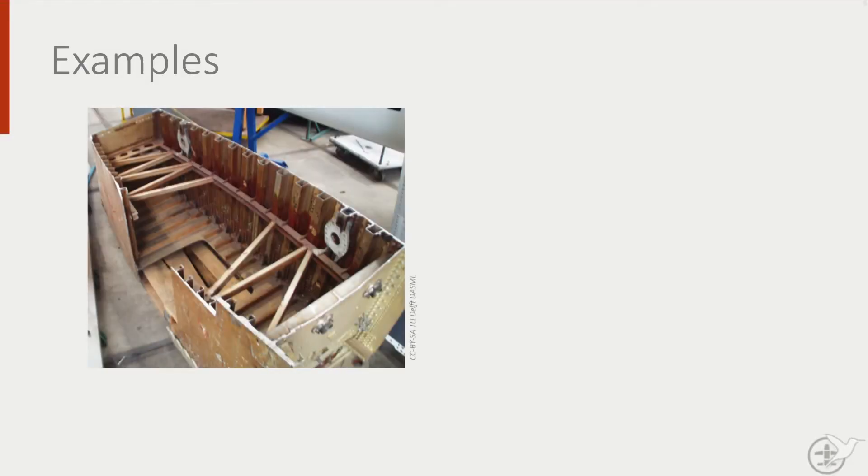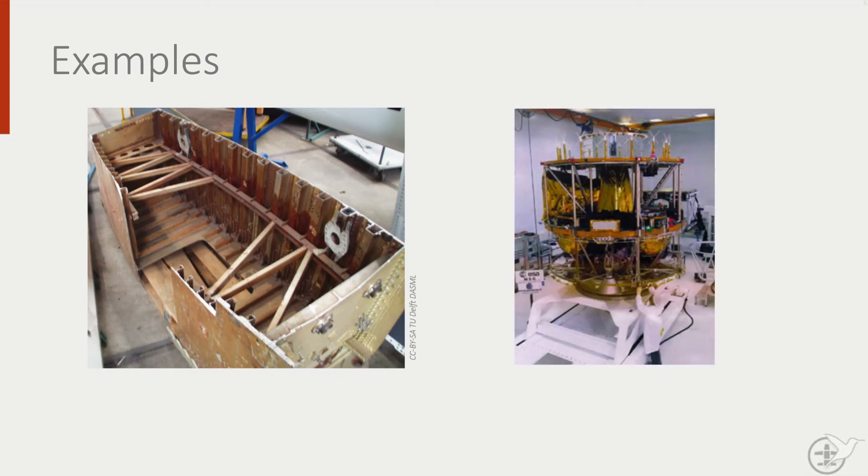Truss structures are still used in aerospace, only more inside of structures to transfer loads, such as ribs and wings or in the center section of an aircraft. It is also used a lot in space structures. However, it is hardly used anymore as the primary structure of a fuselage or a wing.